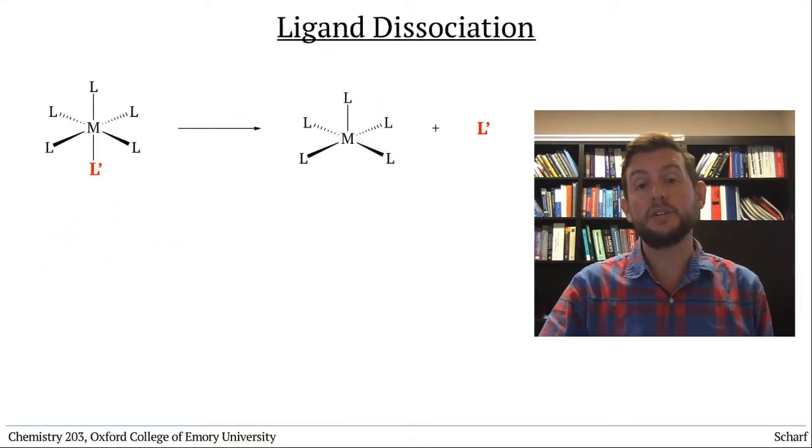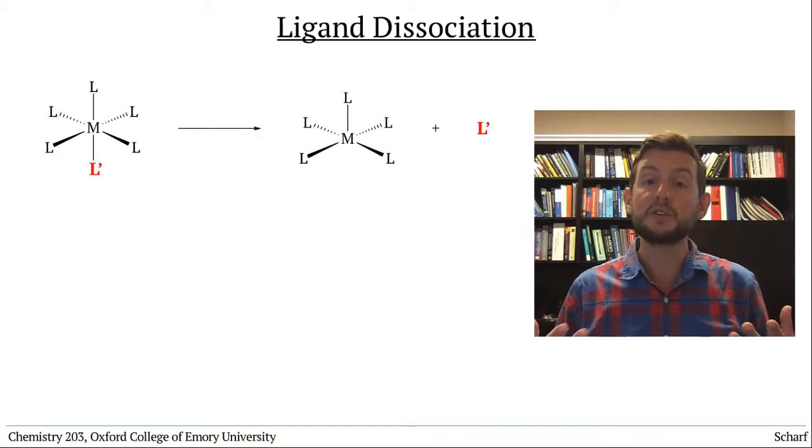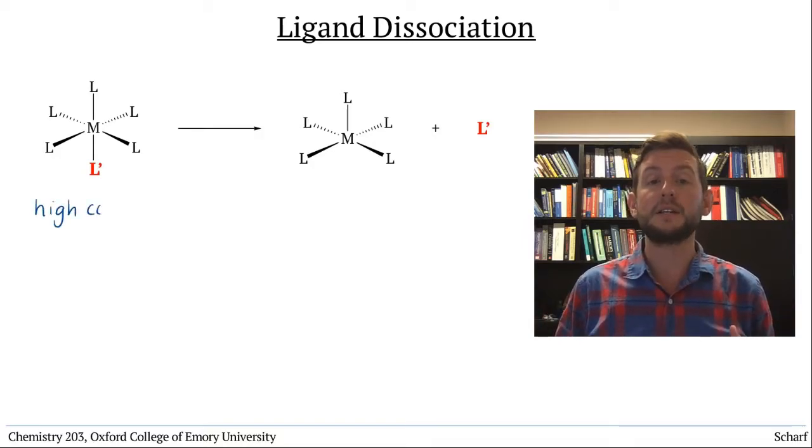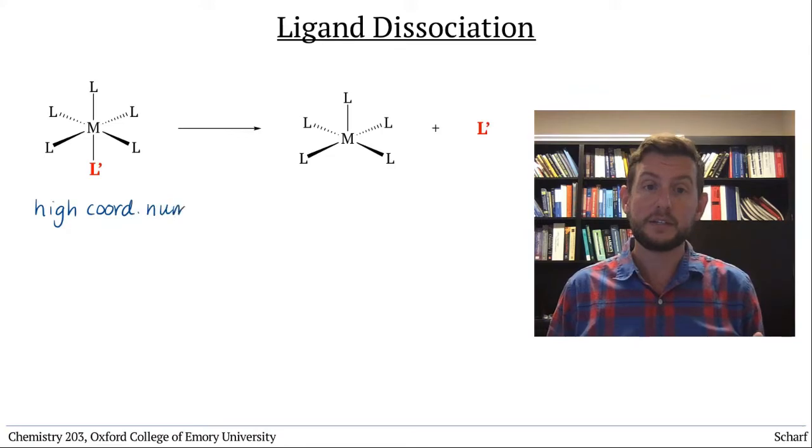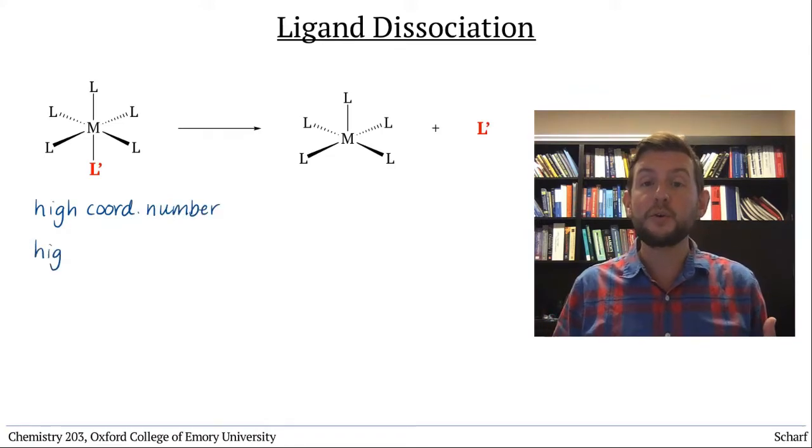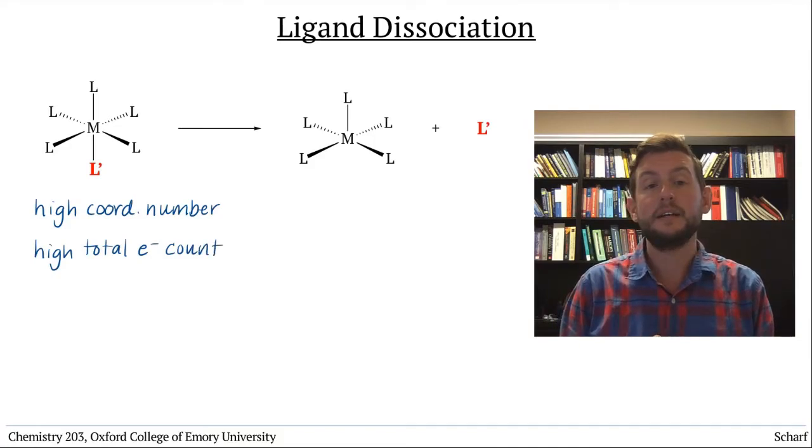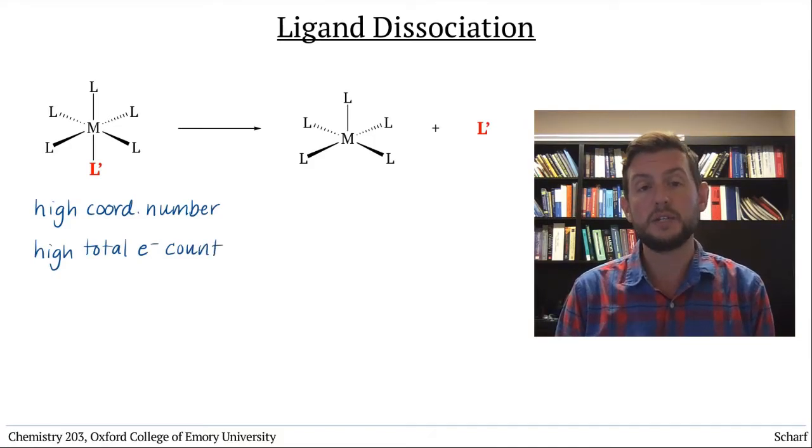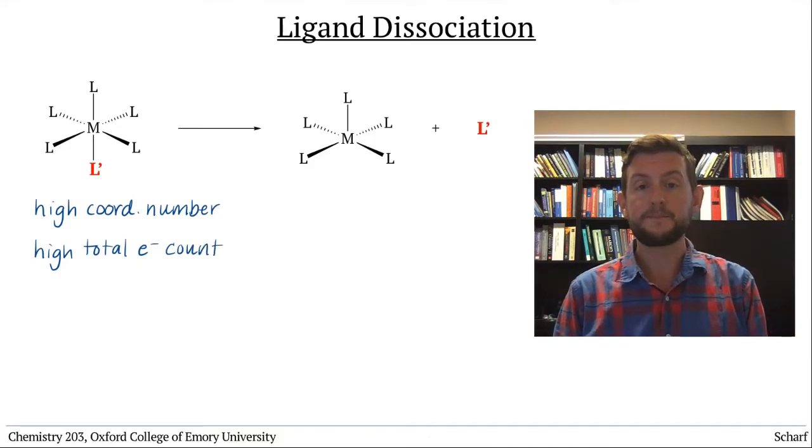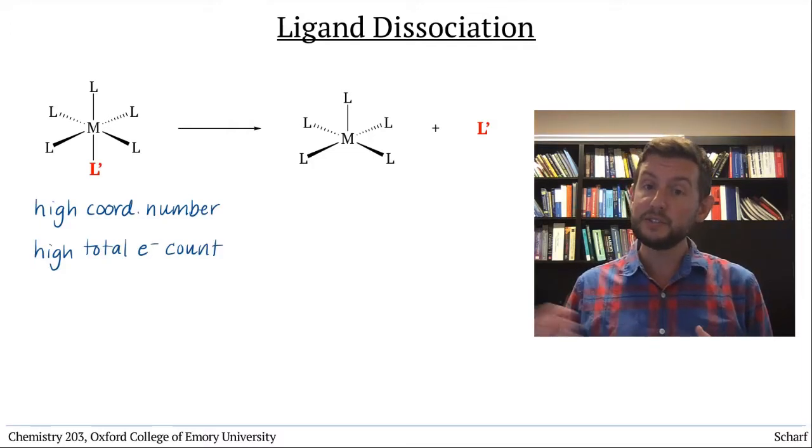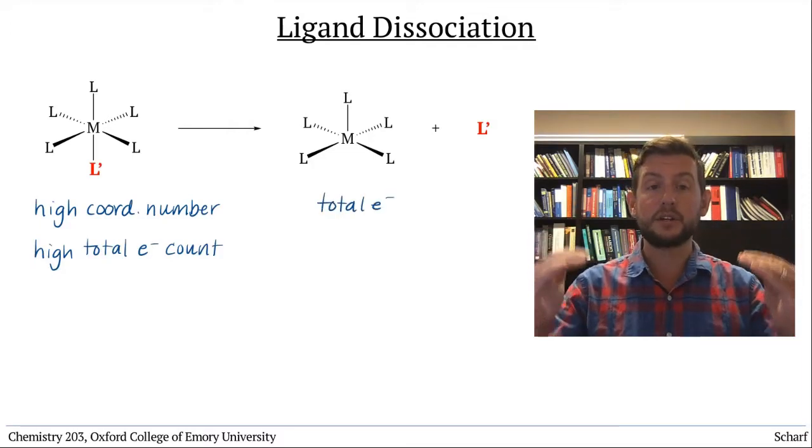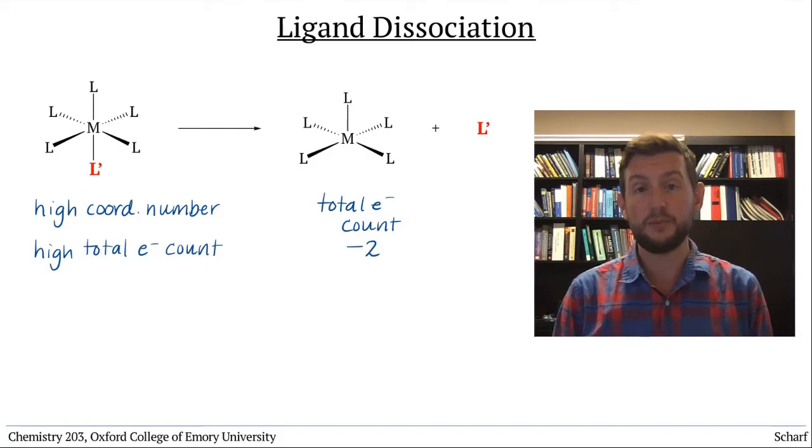Ligand dissociation, on the other hand, typically occurs for coordinatively and electronically saturated compounds. That is, the higher the coordination number and the higher the total electron count, the more likely ligand dissociation is to occur. Whenever a ligand dissociates, the total electron count of the complex goes down by two.